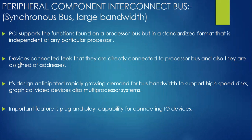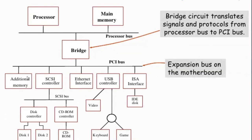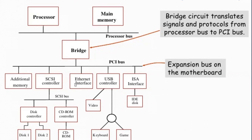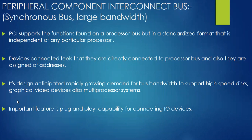Devices connected to the PCI bus feel as if they're directly connected to the processor bus, and they are assigned addresses. Every device connected here is assigned some local address. Whenever the processor wants to communicate with a particular interface or device, it targets the controller or interface first, and then internally the target has its own individual identification address.